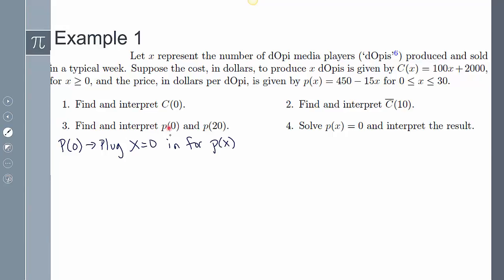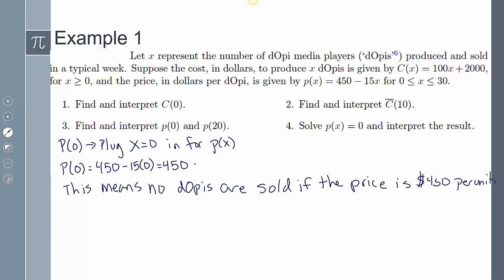Number three, it says find and interpret with my price demand function with zero plugged in and 20 plugged in. So if I plug in zero, p(0) is 450 minus 15 times zero, which is just 450, which means no DOPs are sold if the price is 450. It's too high, it's too expensive, so it's not going to be sold.